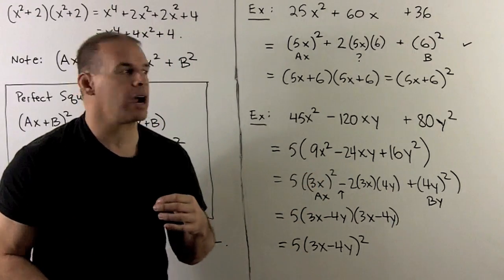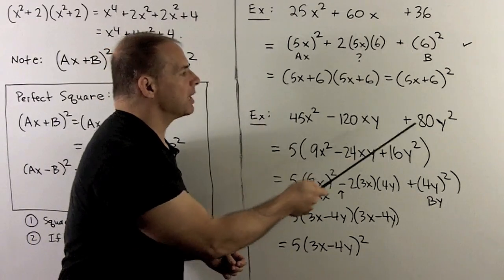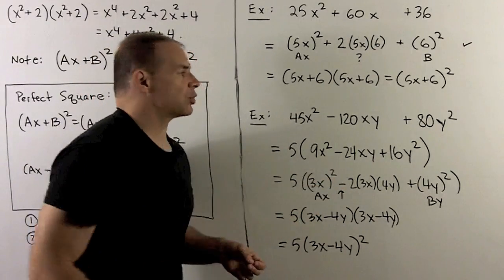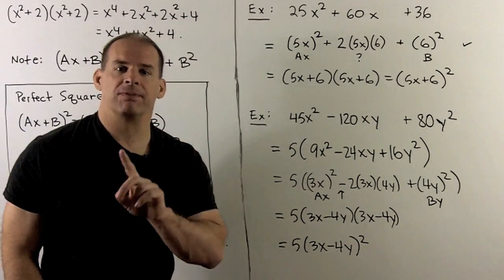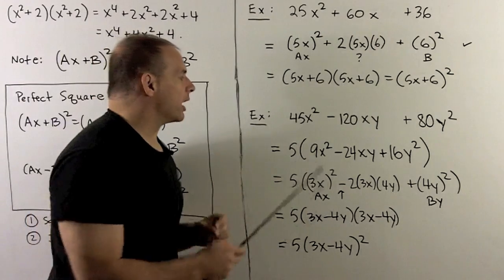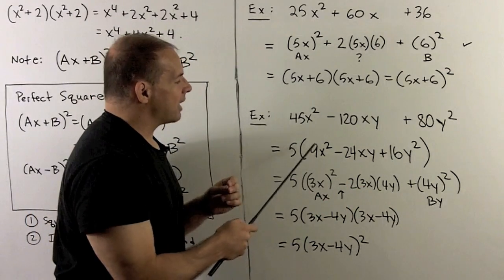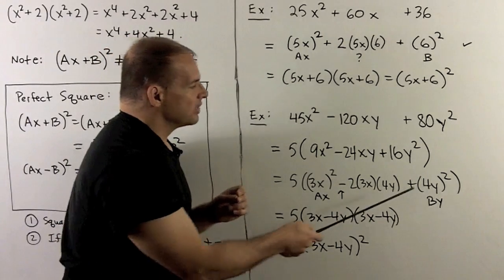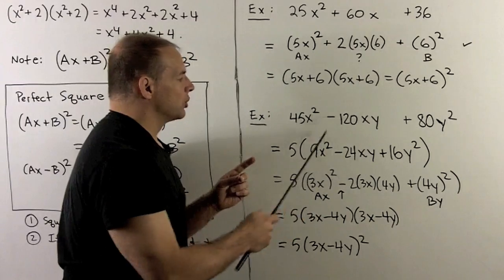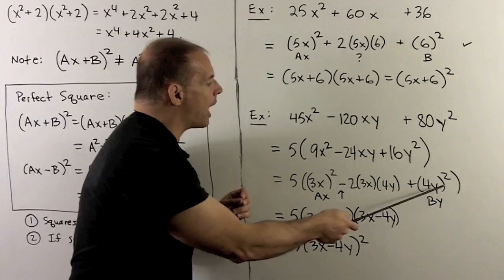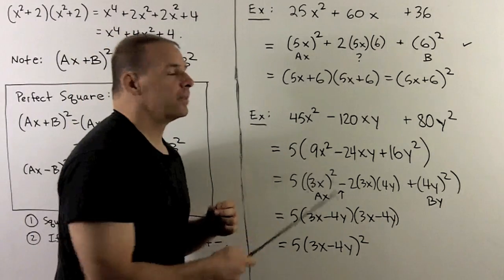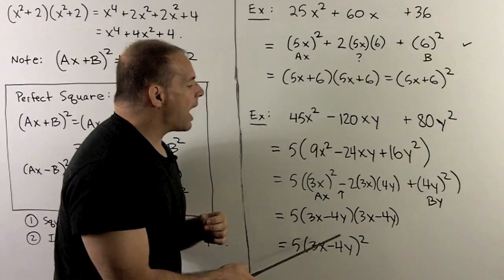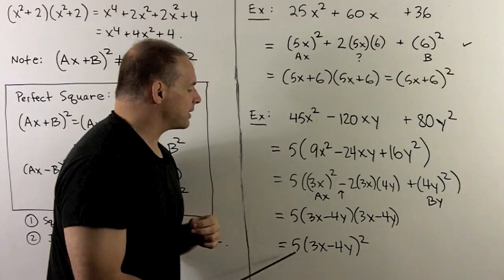Another common situation using two variables: 45x² − 120xy + 80y². We check the ends — 45 and 80 are not perfect squares. But we should always check for a greatest common factor first. Here we pull out a 5, leaving 9x² − 24xy + 16y². Now we have squares on the ends: (3x)² and (4y)². Checking the middle: 2 × 3x × 4y = 24xy, and we have a minus sign, so we use the negative formula. The result is 5(3x − 4y)².